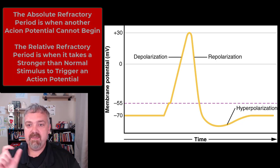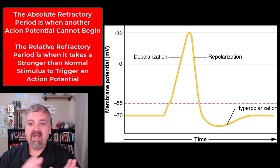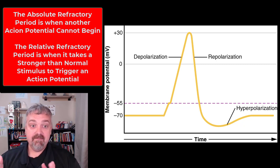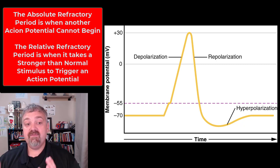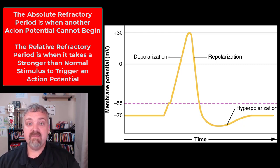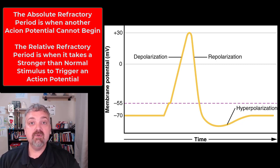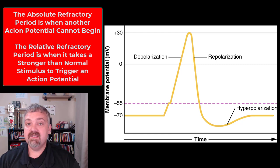So there's a period when an action potential is already in progress where another one cannot be initiated. This is called the refractory period, and it's because of this hyperpolarized state in the lower right-hand corner. So there are two types: the absolute refractory period and the relative refractory period.